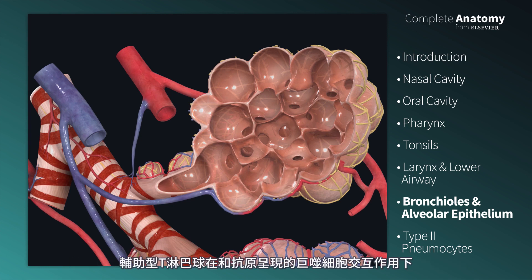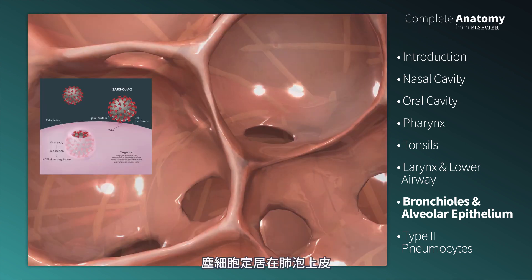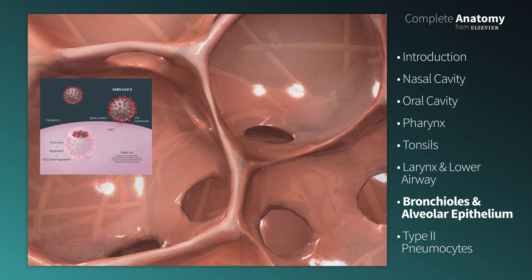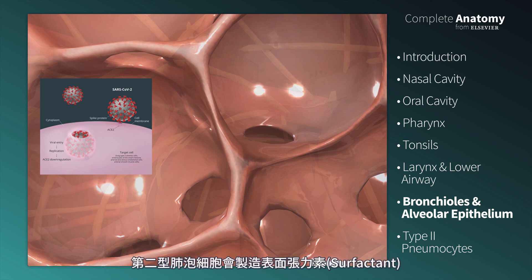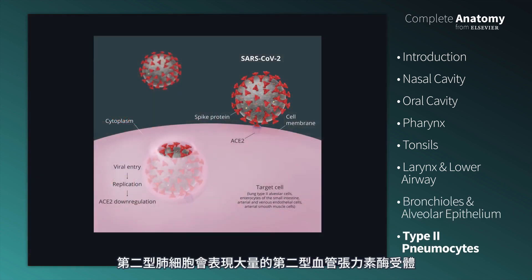The T helper cells then interact with the antigen-presenting macrophages to elicit an immune response. Dust cells reside on the alveolar epithelium, which is comprised primarily of type 1 alveolar cells, or type 1 pneumocytes. In addition, type 2 pneumocytes are present on the alveolar epithelium. These cells are known for the surfactant that they produce, which is a soapy film that reduces the surface tension on the epithelium. Type 2 pneumocytes highly express the ACE2 receptor.